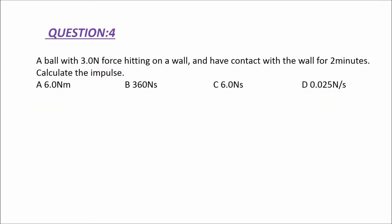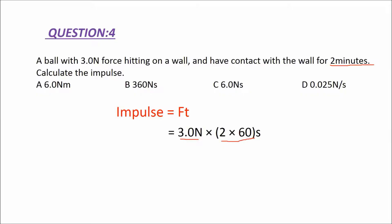Let us discuss the fourth question. A ball with a 3.0 Newton force hits a wall and has contact with the wall for 2 minutes. Calculate the impulse. The formula for impulse is force times time. Substituting force 3.0 Newton and converting 2 minutes into seconds, we get the answer 360 Newton seconds. So the answer is B.